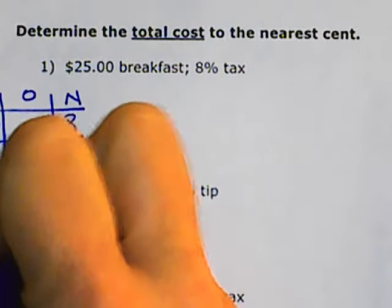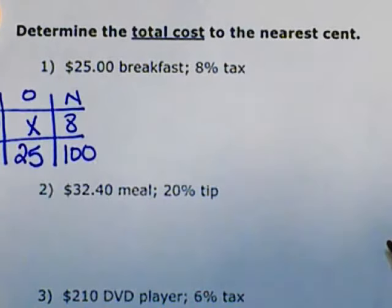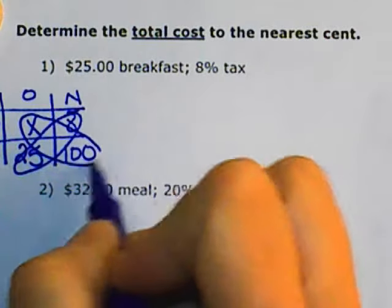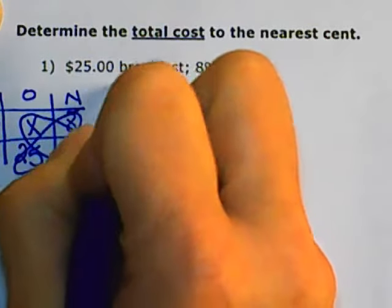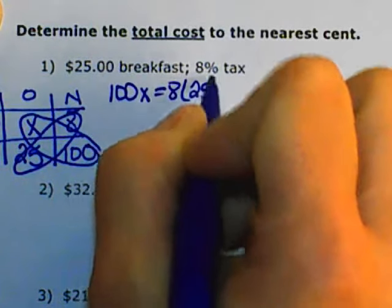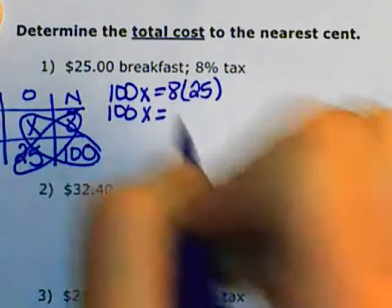The original goes on the bottom left, and we are looking for the amount of tax. We cross-multiply, so we have 100 times x equals 8 times 25. Divide, solve the equation.